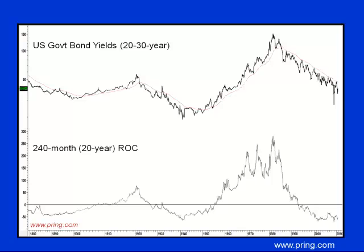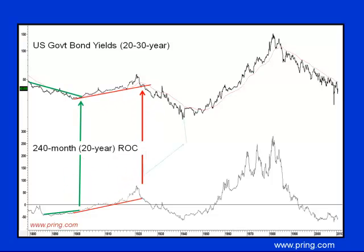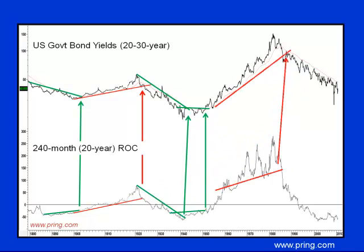One technique that can help identify secular trend reversals at a relatively early stage is to construct long-term trendlines on the 240-month rate of change, which is also a 20-year rate of change. When such ROC violations are confirmed by a similar trendline break in the yield, the reversal signal is triggered. As you can see, in the fall of 2010, it's once again possible to construct a line for both series. Since they're intact, so is the secular downtrend in yields.